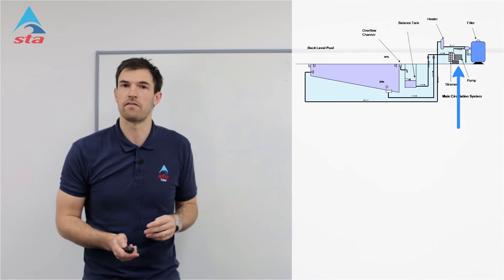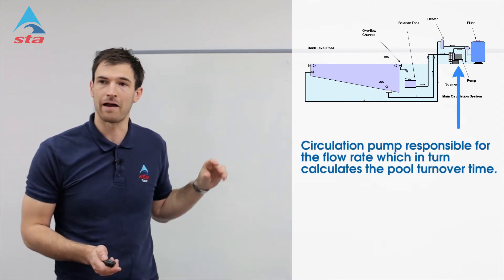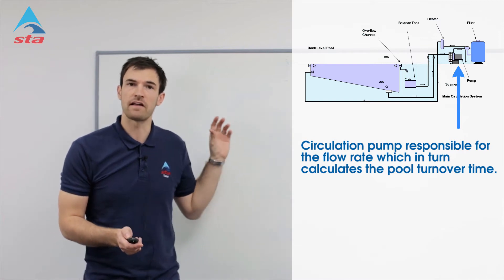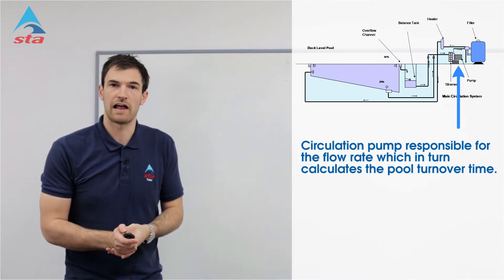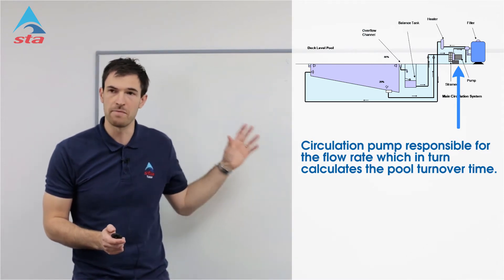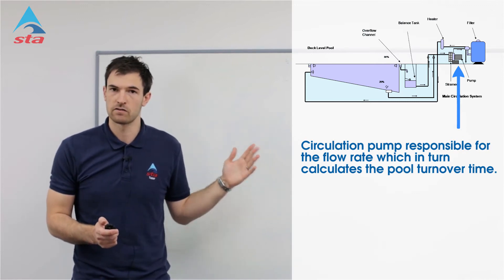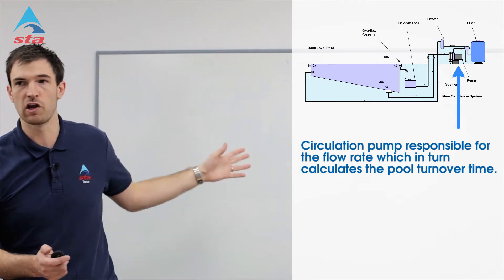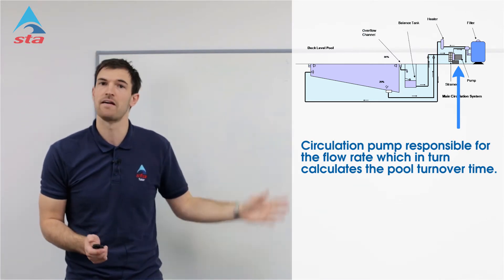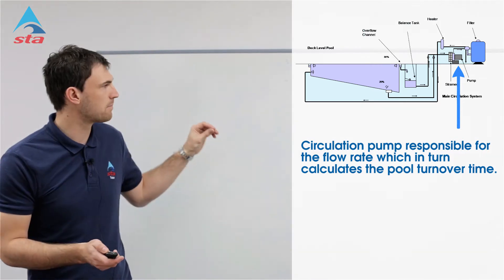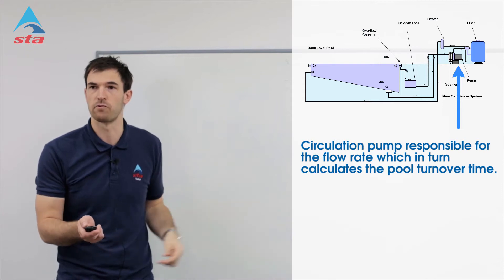Looking at the basic schematic of a swimming pool, you've got your water flow coming from your balance tank, from your sumps, and then that's going into your pump. Your pump is integral to the circulation rate — it determines the flow rate, the speed of water, the volume, and the turnover time. So if that pool is sitting at 300 cubic metres and you've got a 150 cubic metres per hour flow rate, that's a two-hour turnover time. That's an important element that's going to affect the filtration velocity, the speed downwards through the filter.